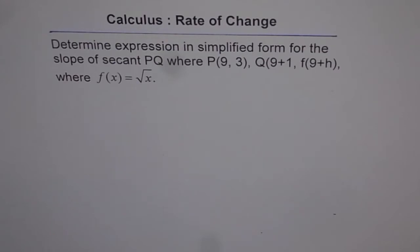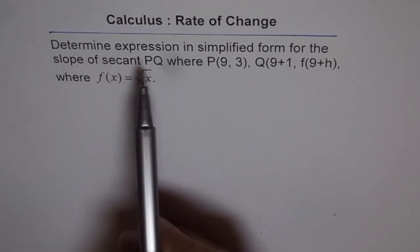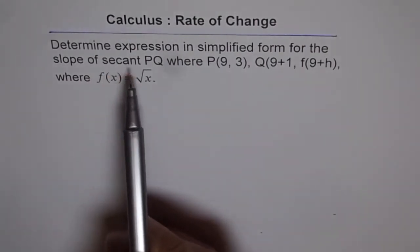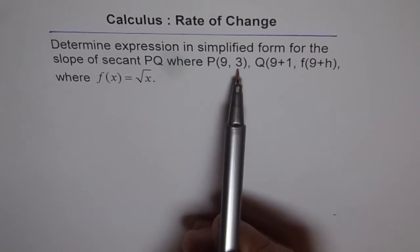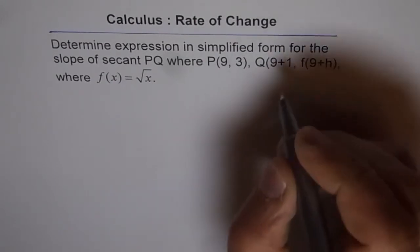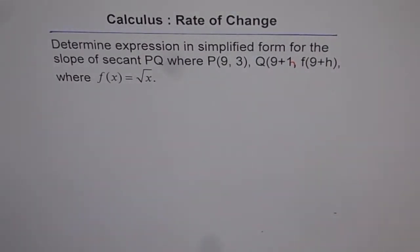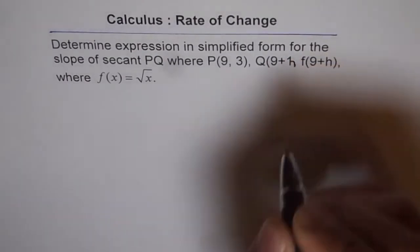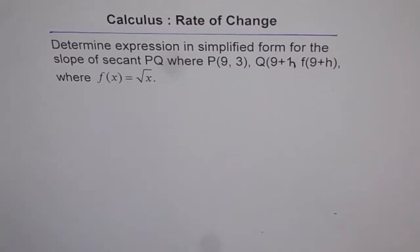With the help of this example, we'll try to see how. The question before us is: determine an expression in simplified form for the slope of secant PQ, where P is the point (9, 3) and Q is (9+h, f(9+h)), where f(x) equals the square root of x.